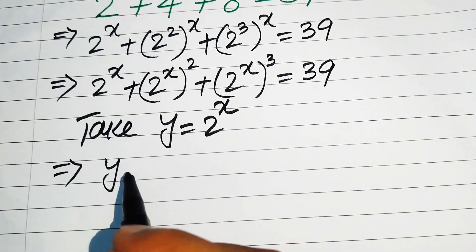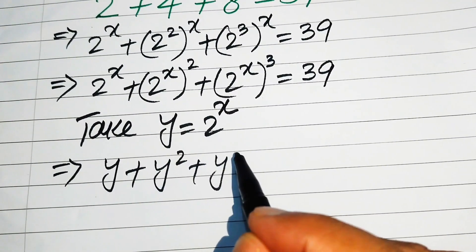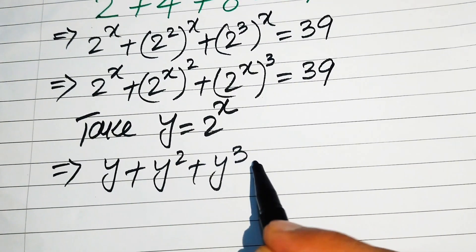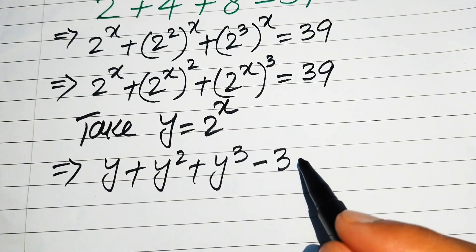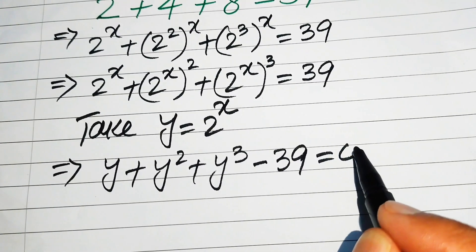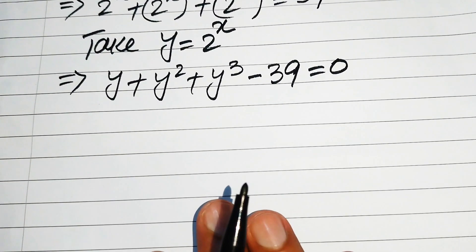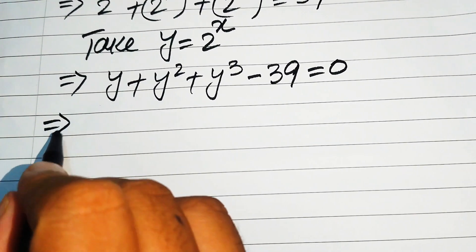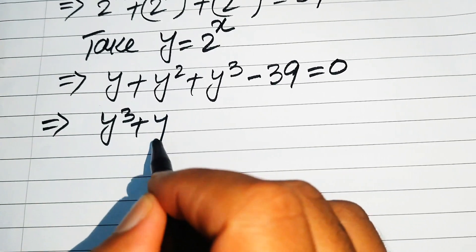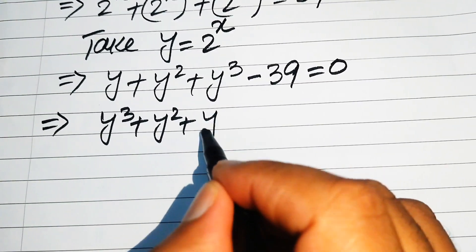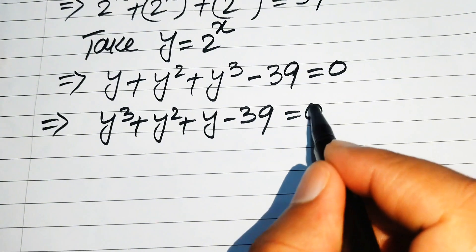The equation is written as y plus y squared plus y cubed, and moving 39 to the left-hand side gives minus 39, so the whole equation equals 0. Rearranging the terms, we write it as y cubed plus y squared plus y minus 39 equals 0.